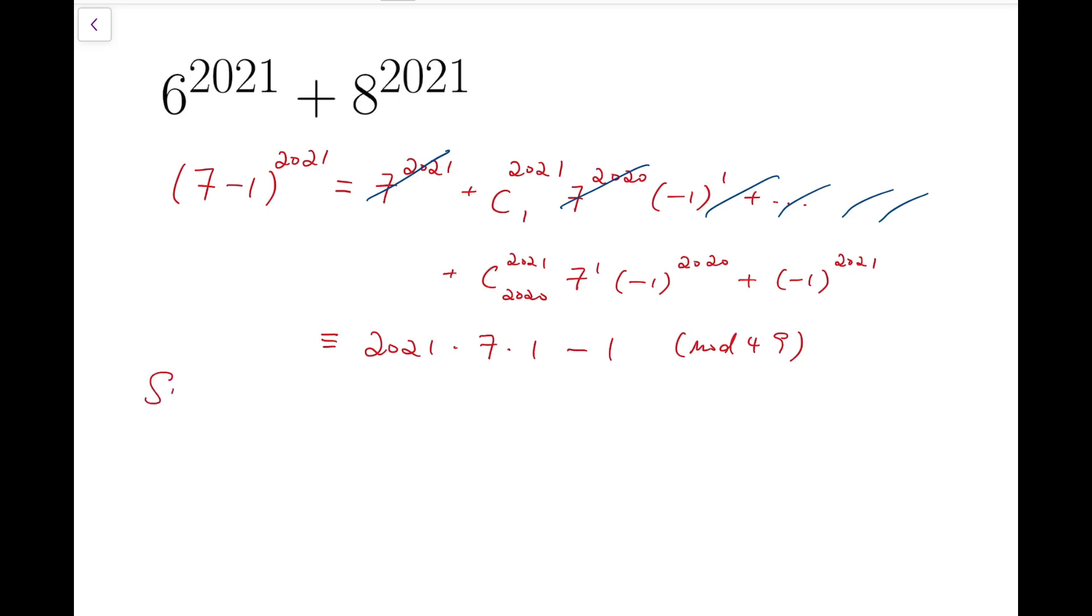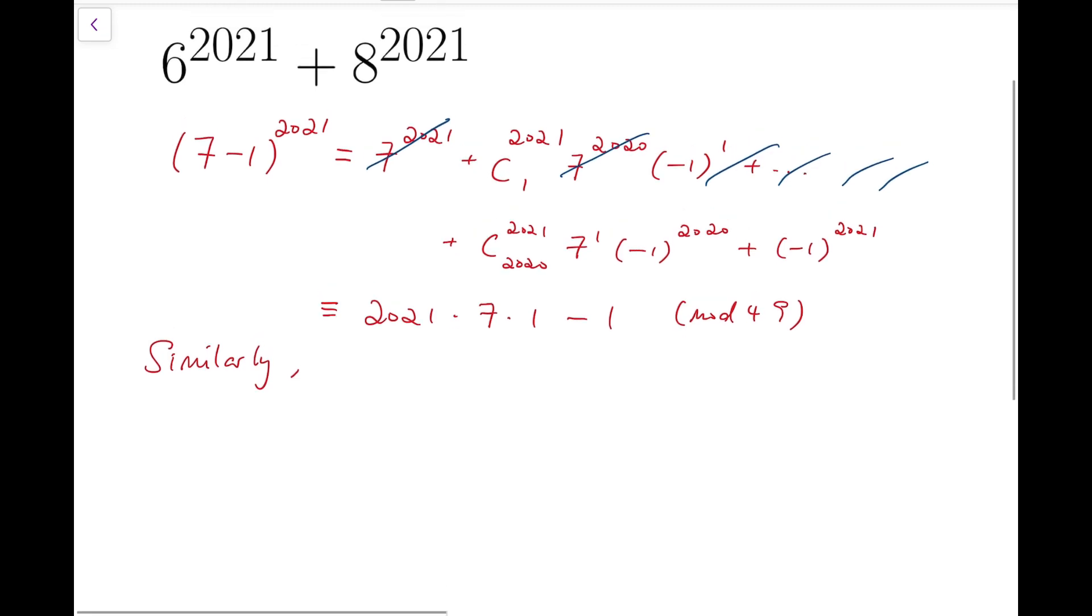And similarly, we can rewrite 8 to the power of 2021 as (7+1) to the power of 2021. And now we can say that it is congruent to 2021 times 7 times 1 plus 1, which means they have the same remainder when divided by 49.